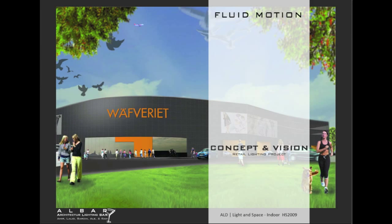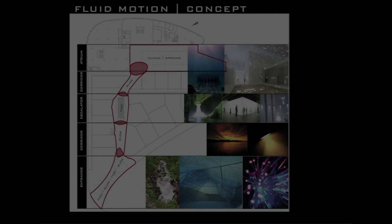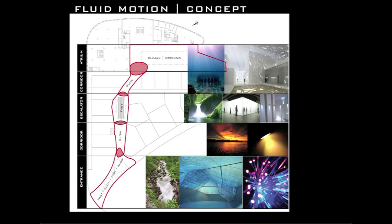Our project's concept is called Fluid Motion. This is because we interpret this section of the mall as a branch of the river that passes through. It connects the northern part of the river's bend to the southern part.